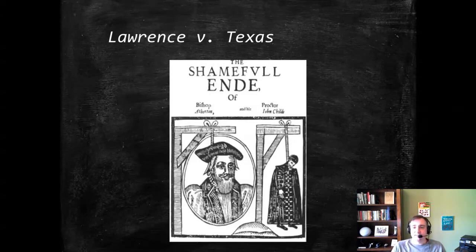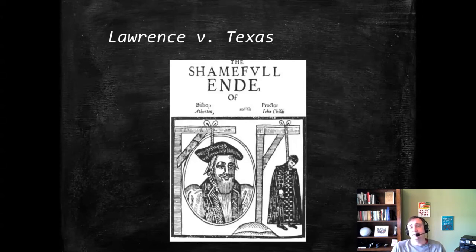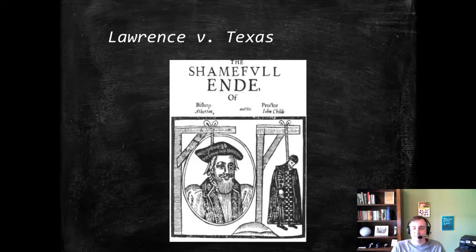Texas's statute says: any contact between any part of the genitals of one person and the mouth or anus of another person, or the penetration of the genitals or anus of another person with an object. That's not an unusual way to define an anti-sodomy law. Anti-sodomy laws primarily existed at this time in the South and Midwest, including Kansas. Notably — to many students' surprise — it includes oral sex, which is quite common according to sex surveys, and yet would be illegal under Texas's law for members of the same sex.